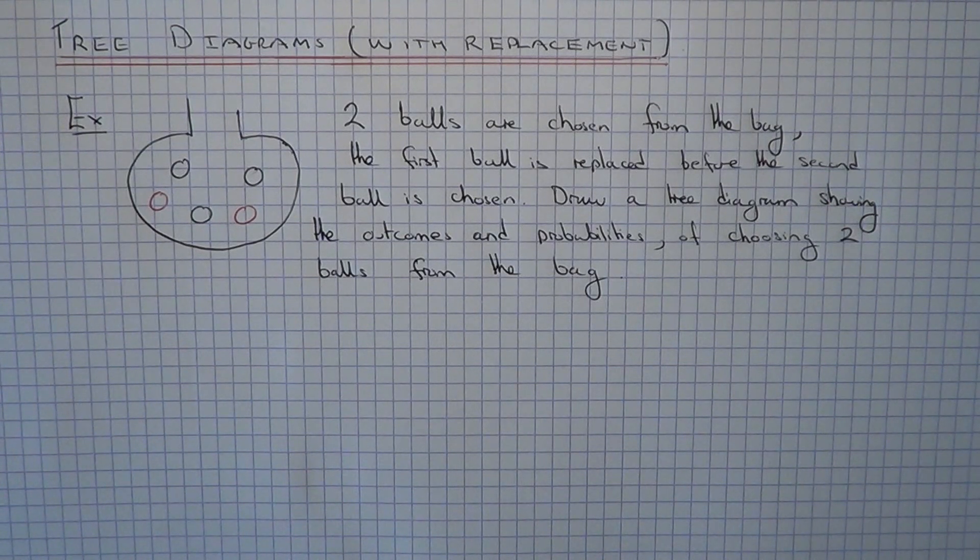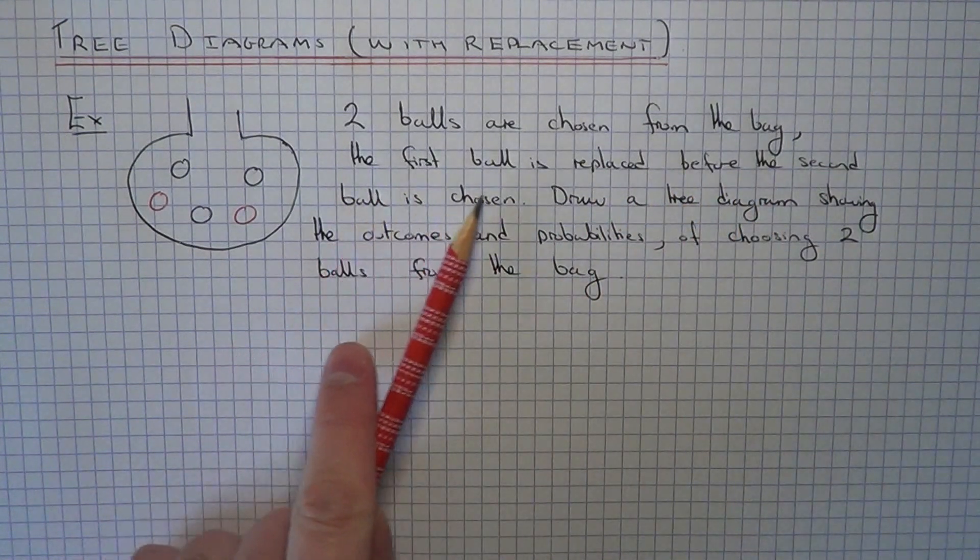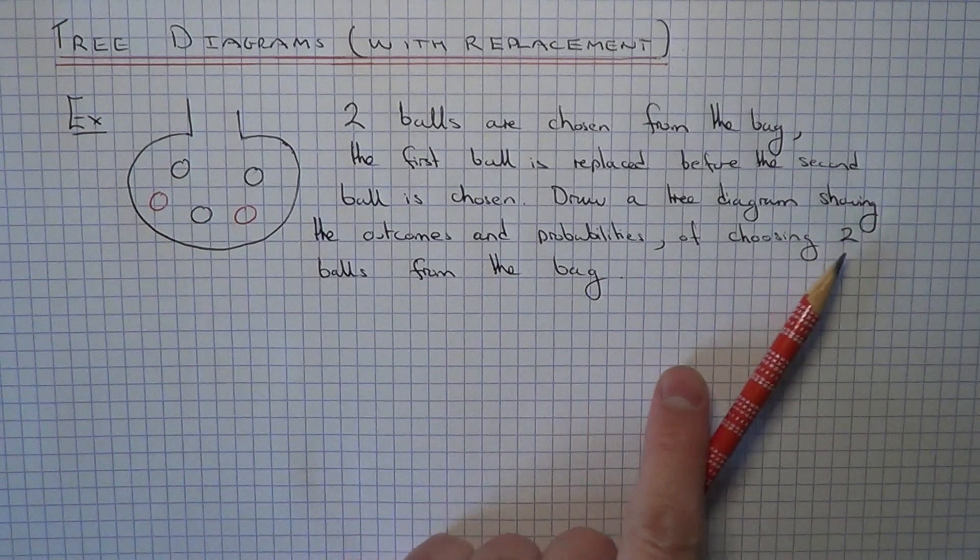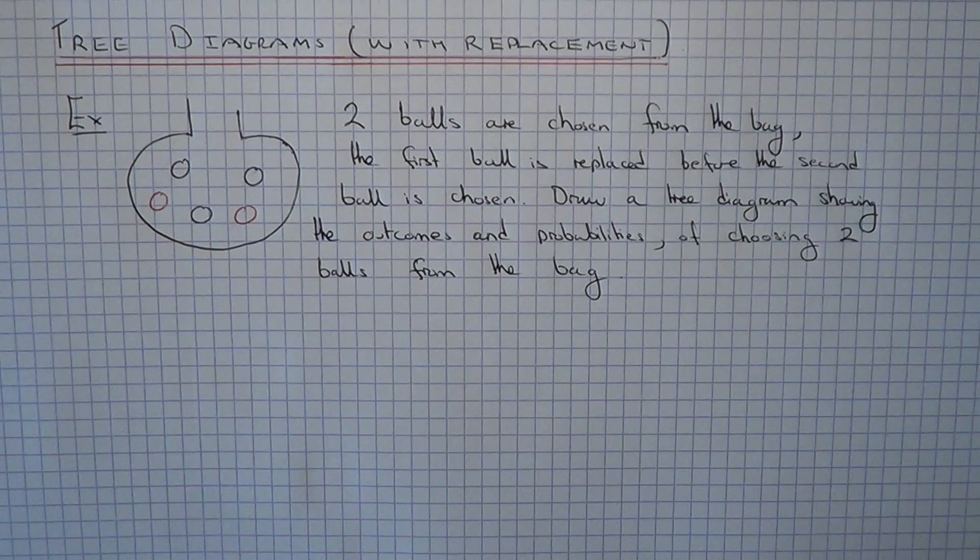Okay, so let's go straight to the example. Two balls are chosen from the bag, the first ball is replaced before the second ball is chosen. We have to draw a tree diagram showing the outcomes and probabilities of choosing two balls from the bag.